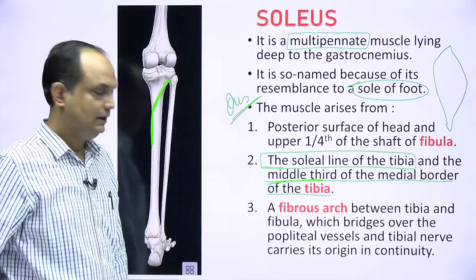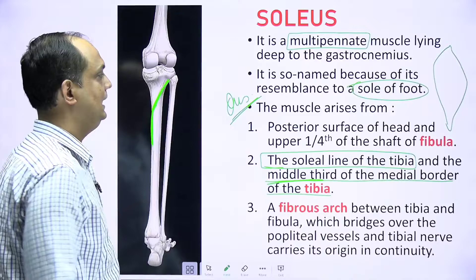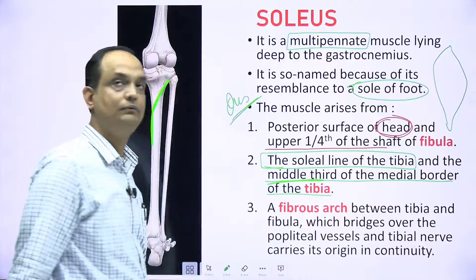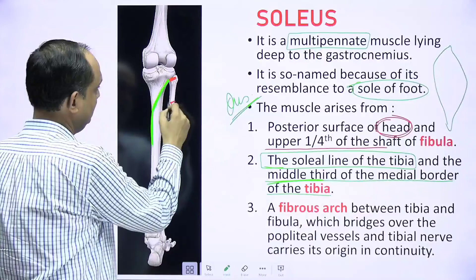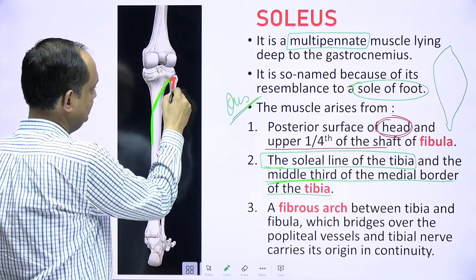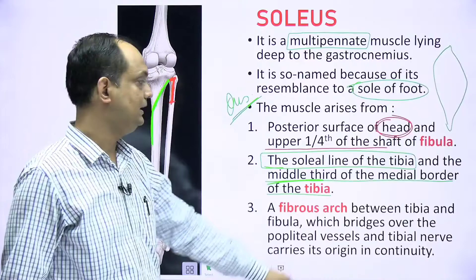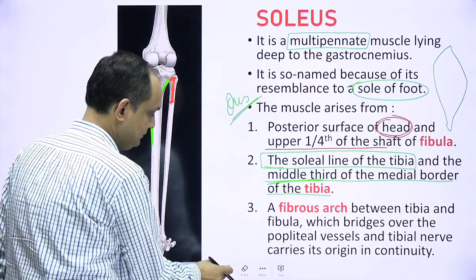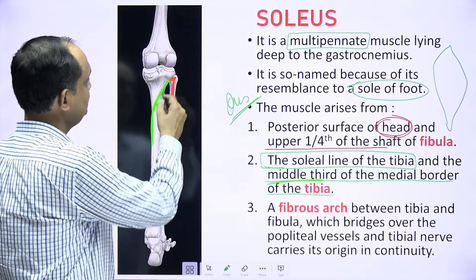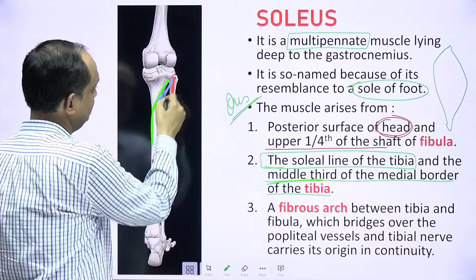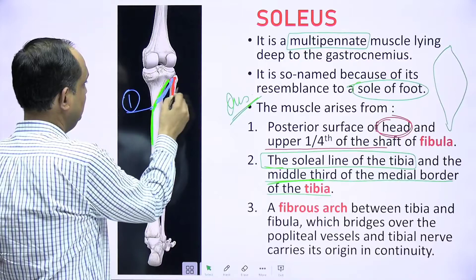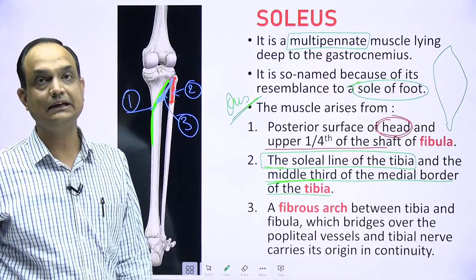The third origin of soleus is a fibrous arch connecting the tibia to the fibula, which bridges over the popliteal artery and tibial nerve. So soleus has three origins: from the soleal line of the tibia with the upper medial border, from the head and upper shaft of the fibula, and from the fibrous arch between them. Deep to this arch you can see the tibial artery and nerve.